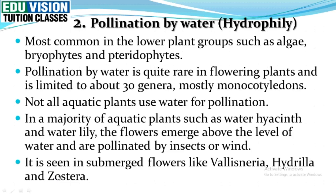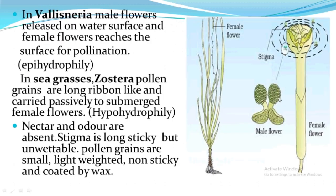We can see some other examples, like submerged flowers where the water flows completely, such as Vallisneria, Hydrilla, and Zostera. In the Vallisneria case, the male flower gets released on the surface of water and the female flower also comes to the surface of water, where pollination happens on the surface of water. This is called epi-hydrophily.